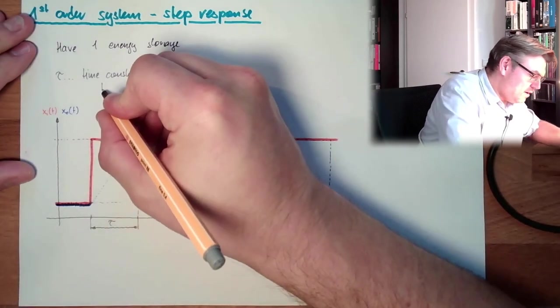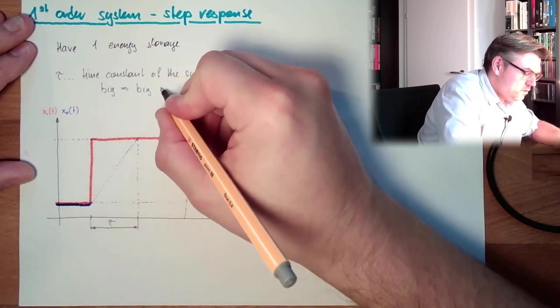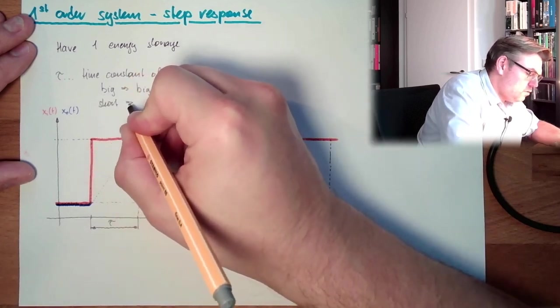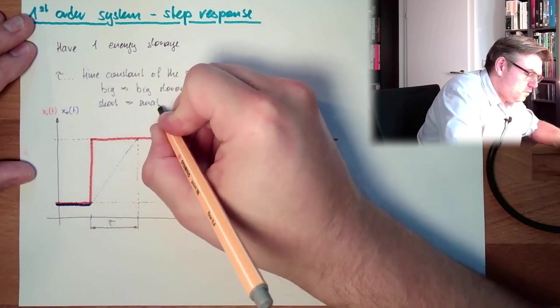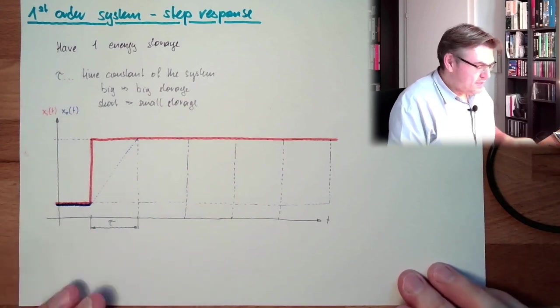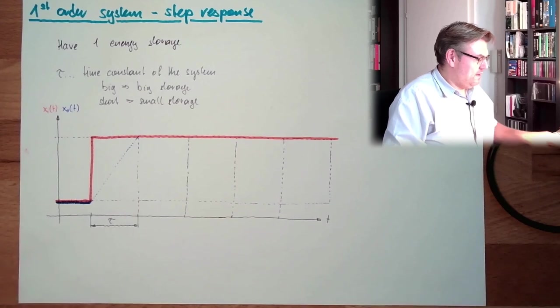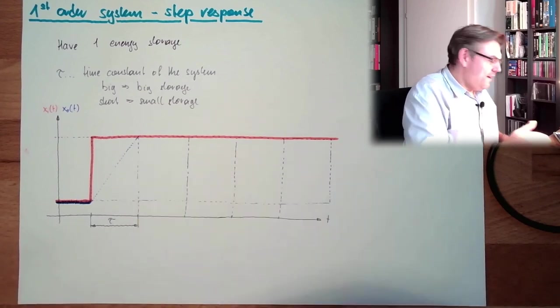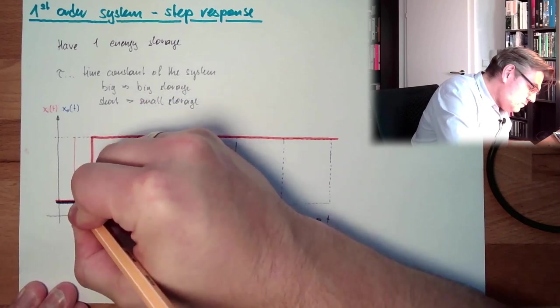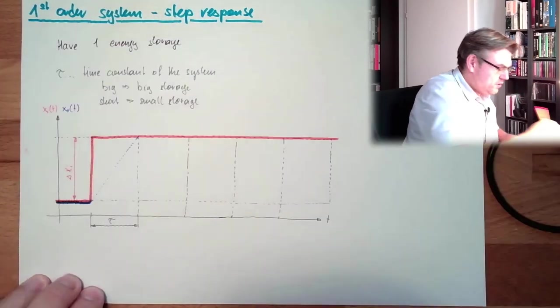Big storage, small tau. Short, small storage. But the basic principle is always the same, so we will start up at the beginning. Here, we have the change. This is delta xi, this is the change.